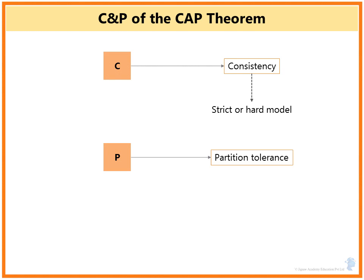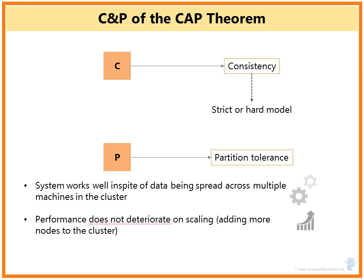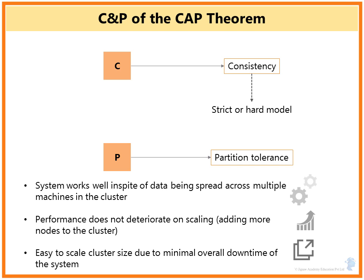P stands for partition tolerance. The system works well in spite of data being spread across multiple machines in the cluster, meaning performance does not deteriorate on scaling. Even adding more nodes to the cluster does not degrade performance under increased data loads. You can scale out the cluster size with minimal or absolutely no downtime — represented by the letter P in the CAP theorem.